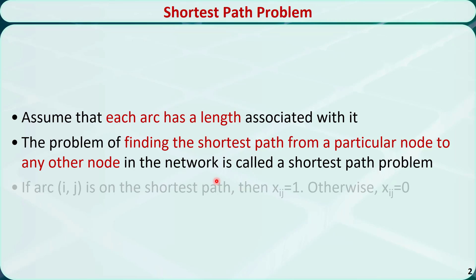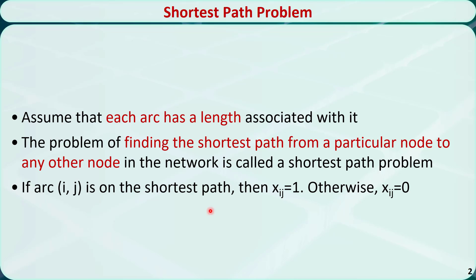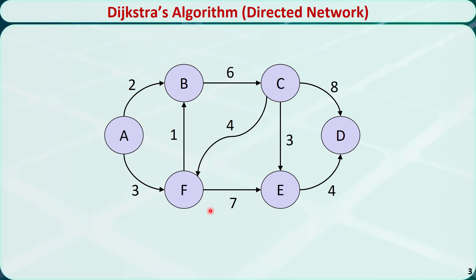If an arc is on the shortest path, we can denote it with x equal to 1; otherwise, x equal to 0. Now let's see an example. This is a directed network. It has 6 nodes and 9 arcs. Suppose we want to find the shortest path from node A to node D.